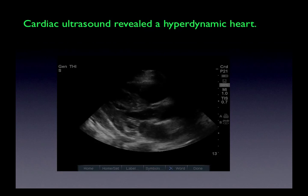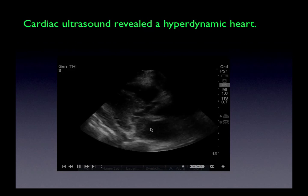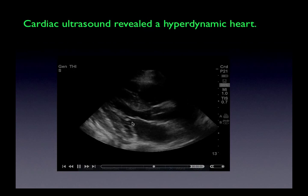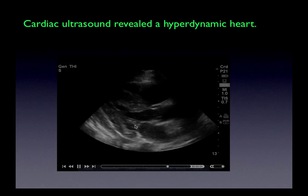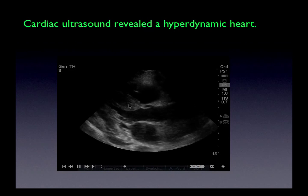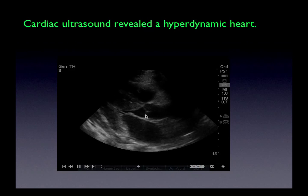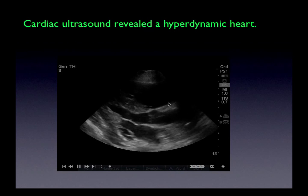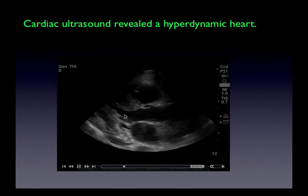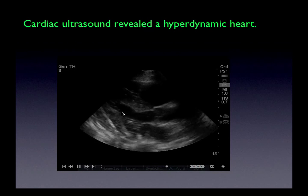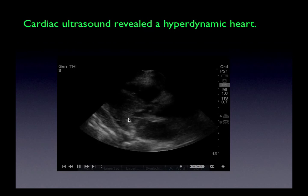Cardiac ultrasound revealed a hyperdynamic heart. Let's take a look at this parasternal long view. Here's the left atrium, the mitral valve being pulled by the chordae tendineae into the papillary muscle. Blood flows from the left atrium through the valve into the left ventricle — here are the walls of the ventricle and the septum. Blood flows out the aorta past the aortic valve, and the right ventricle is up here. We can see there is essentially total obliteration of the left ventricular cavity as the heart beats — this is a hyperdynamic heart.